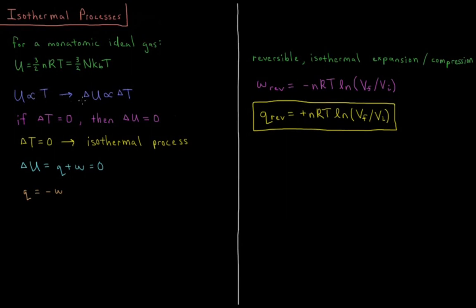During some process, the change in internal energy is going to be proportional to the change in temperature. So if we have some process where the change in temperature is zero, then the change in internal energy of an ideal gas is also going to be zero. Processes where the change in temperature equals zero are called isothermal processes — 'iso' being the root word for same, and 'thermal' relating to temperature and heat.